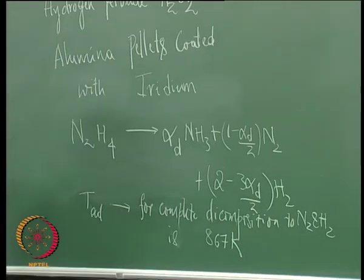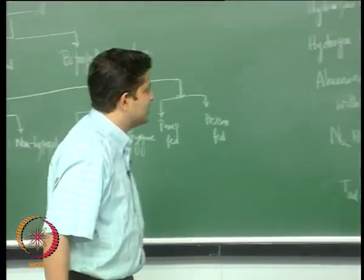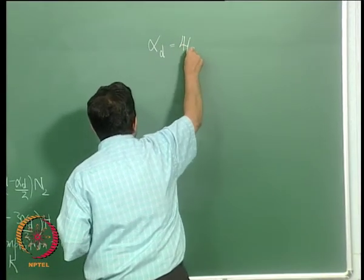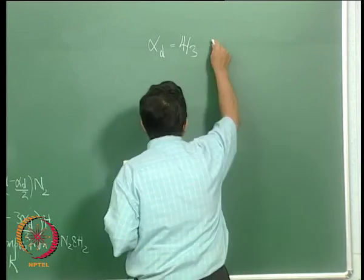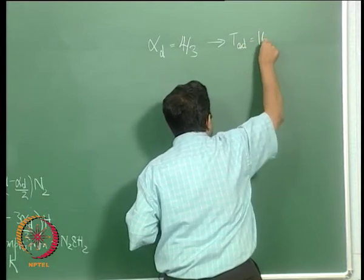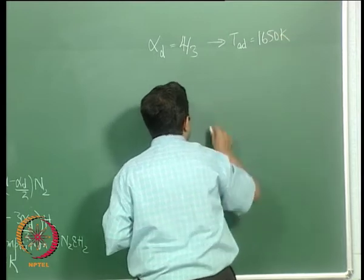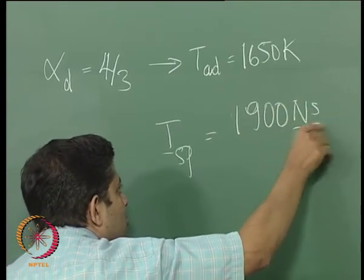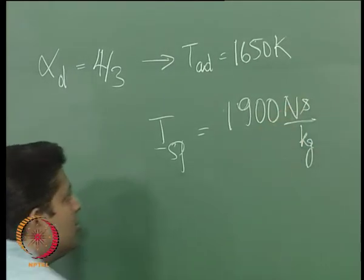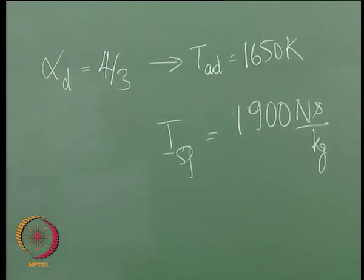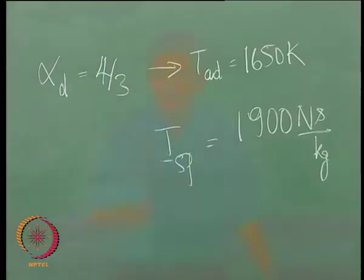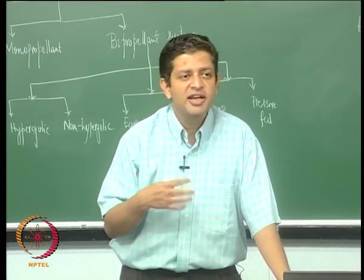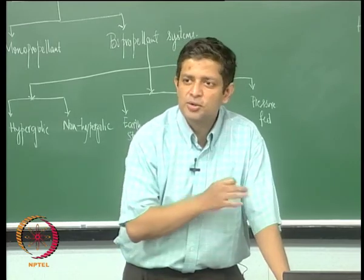For hydrazine (N₂H₄) decomposition, it can decompose as: N₂H₄ → α_D · NH₃ + (1 − α_D)/2 · N₂ + ... If it decomposes completely to nitrogen and hydrogen, the adiabatic temperature is only about 867 K. The optimal value is around α_D = 4/3, at which the adiabatic temperature is about 1650 K. Although the ISP of monopropellant systems is lower compared to solids, they are used in satellite applications because pulsed rather than continuous operation is needed, and liquids are very convenient for such use.